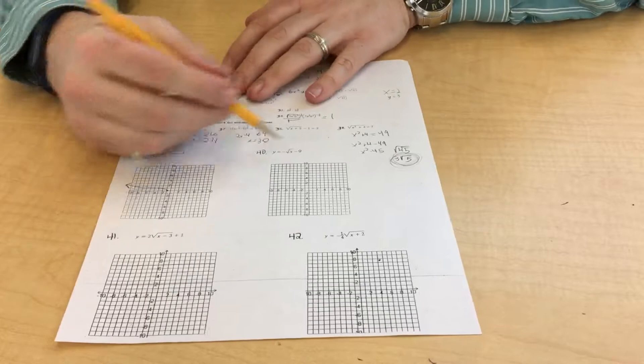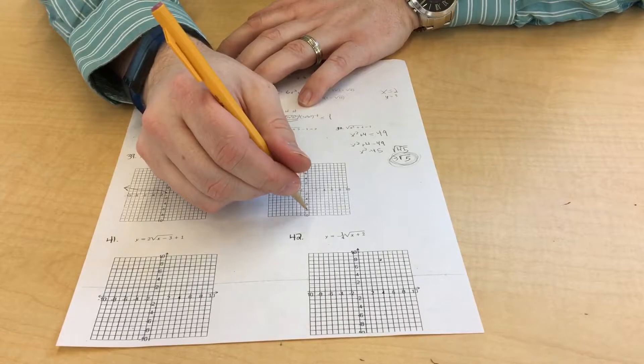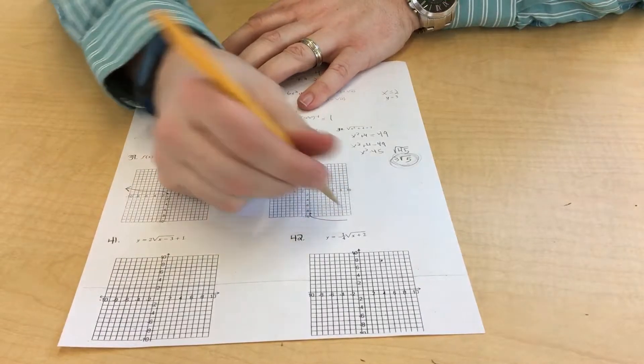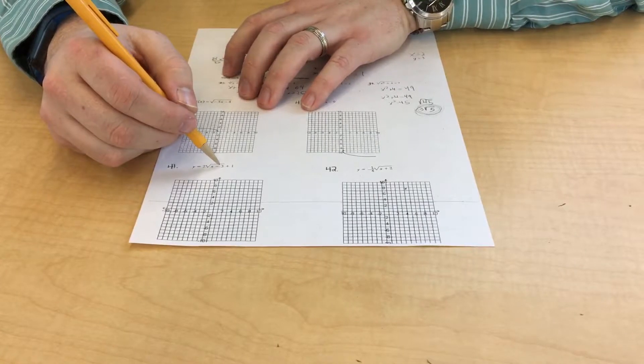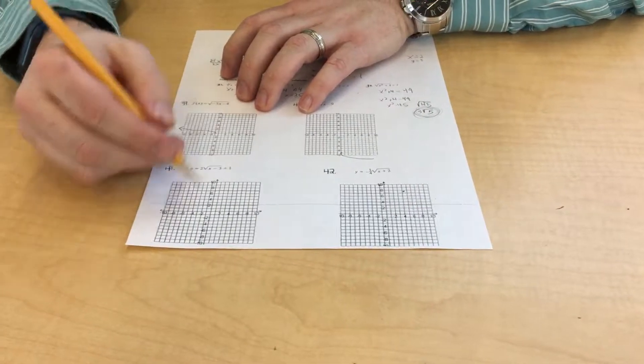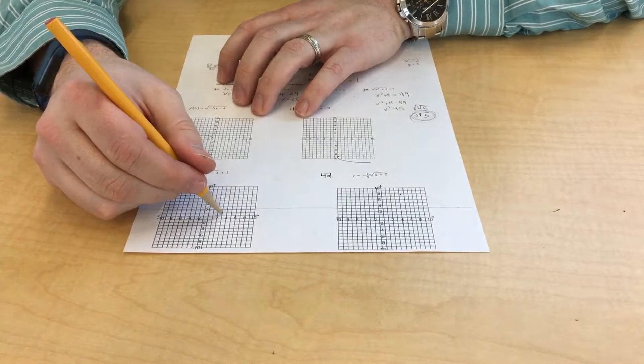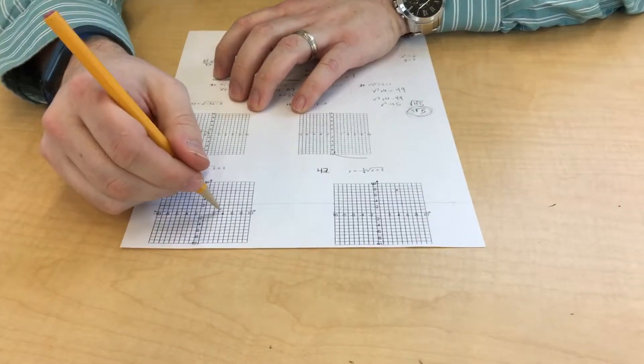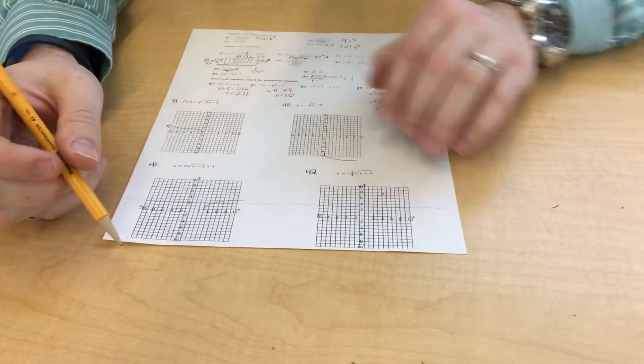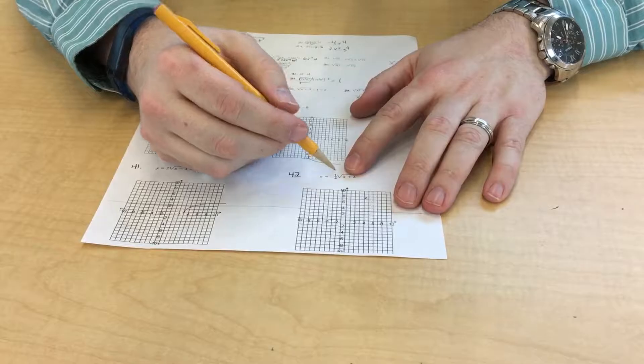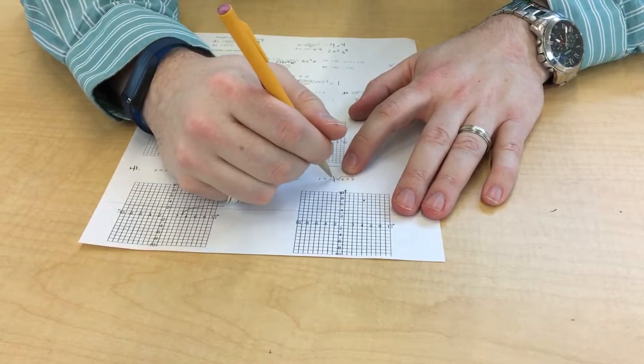You can graph these in your calculator. The negative flips it upside down. The minus 9 moves it down. So it's kind of like that. The x minus 3 moves it 3 to the right, up 1. 3 to the right, up 1. And then it's multiplied by 2, so it's bigger.